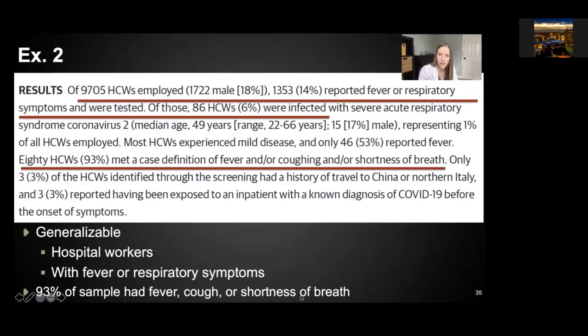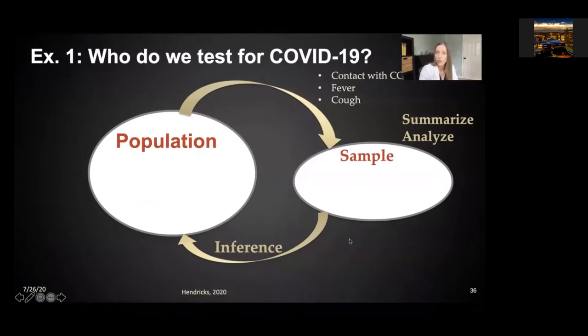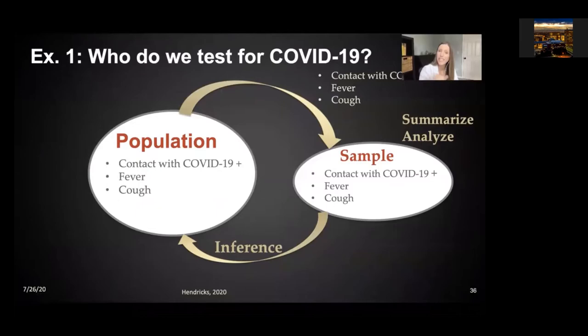If I wanted an accurate estimate of the prevalence of fever and respiratory symptoms in people with COVID-19 in general, I would need to have tested all 9,700 people. Coming back to our general framework of statistics: we are sampling people who have a fever or a cough, our sample contains people who have fever or cough, and therefore we can only generalize to the population of people who have a fever and a cough. My second example is on hydroxychloroquine.